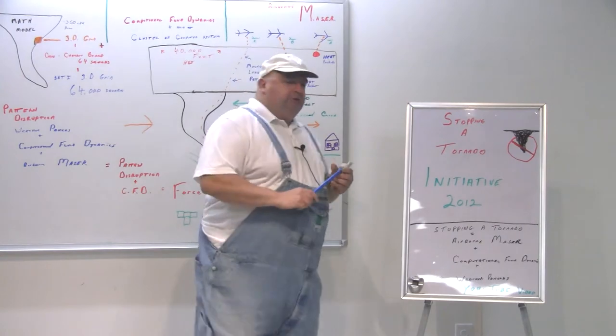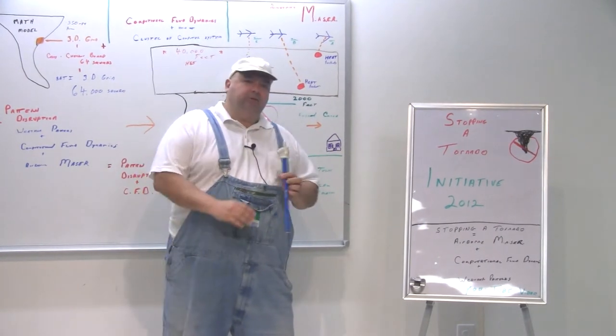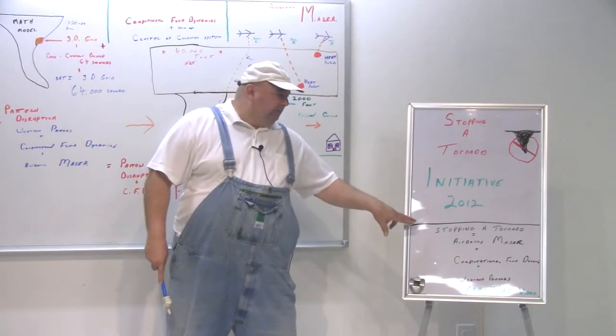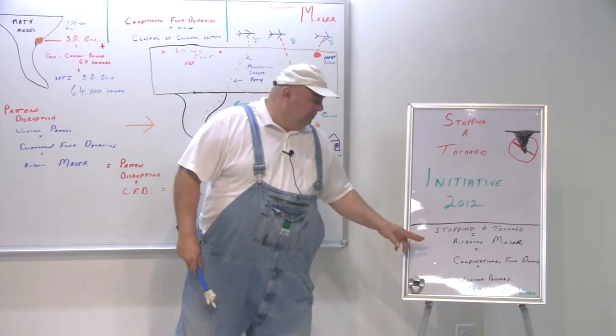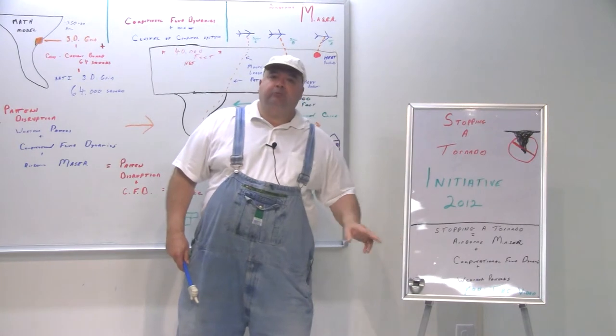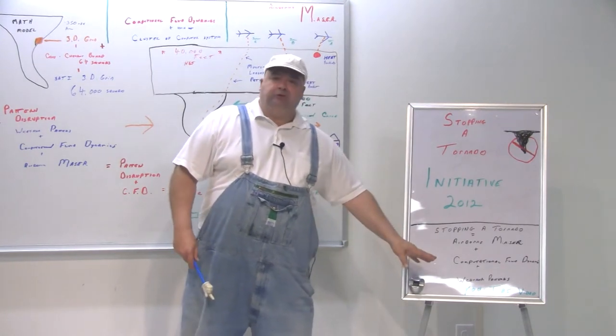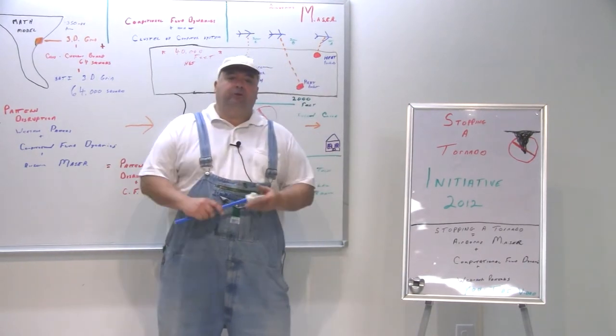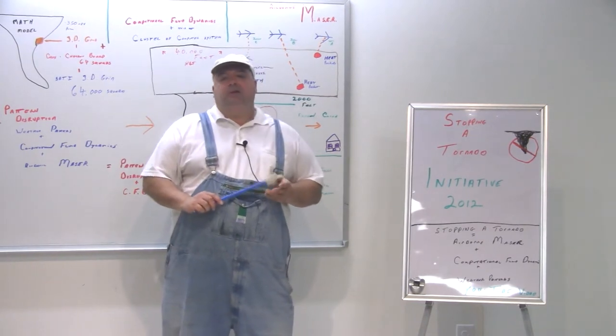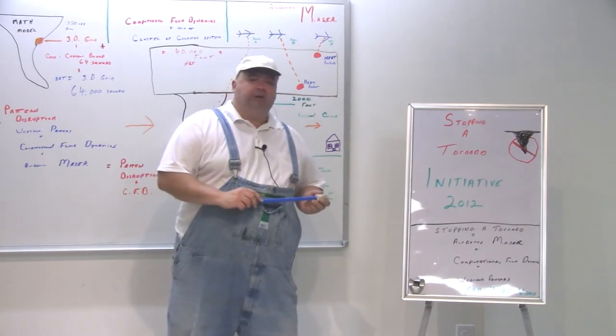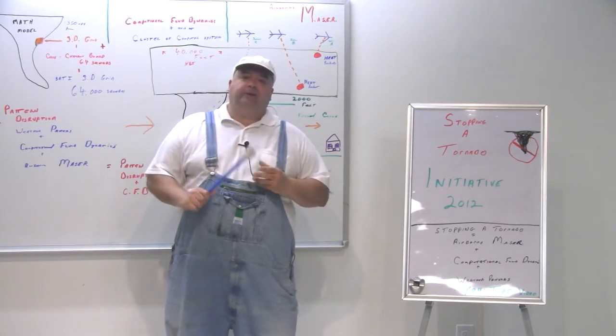If you get a chance, the whole story of why I'm here giving this is Stopping a Tornado: Airborne Maser plus Computational Fluid Dynamics plus Weather Pattern. It's on YouTube. It's 14 minutes long, but it tells the whole story of me going through a tornado in '98, how I came up with theory in 2006, and why I am doing this now.